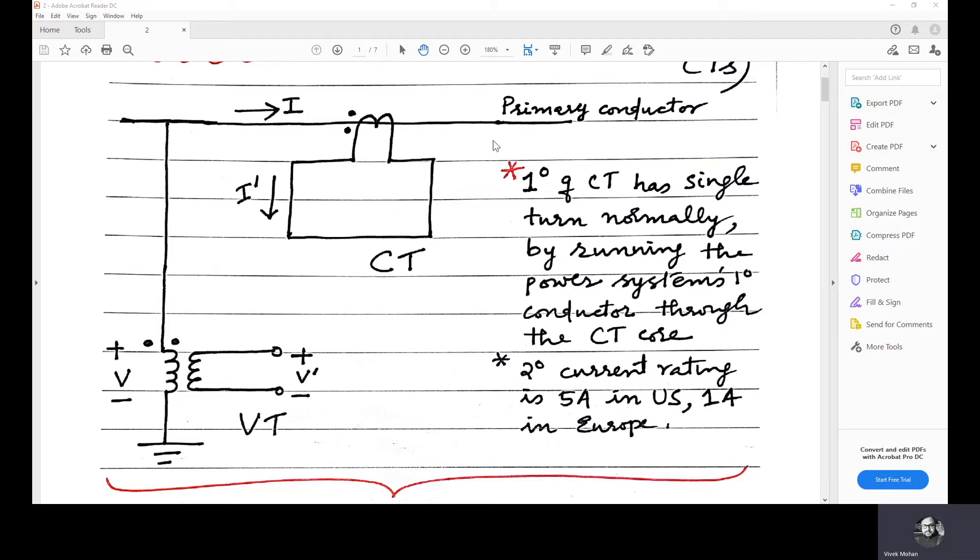Then, in potential transformer, it is connected to the meter or the instrument. Now, regarding connection, the current transformer is connected in series with the instrument, and a potential transformer is connected in parallel with the instrument.